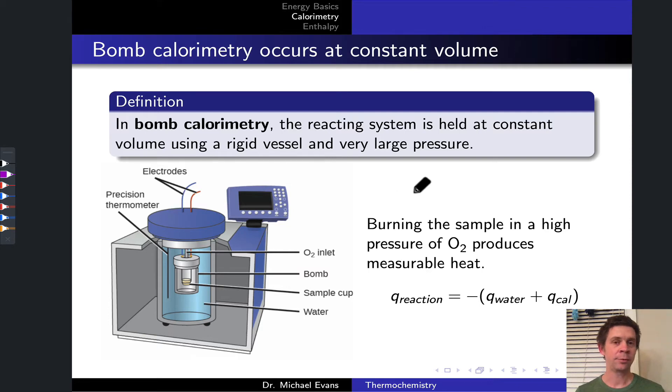So far we've discussed calorimeters that are open to the air so they're at constant pressure. The reaction is occurring under one atmosphere of pressure, which is held constant essentially by the Earth's atmosphere. That's one way to do calorimetry, and it leads to one type of heat value for the process occurring at constant pressure.